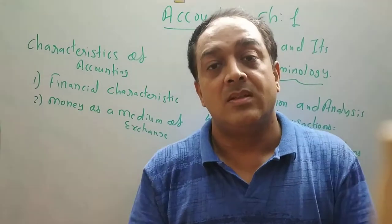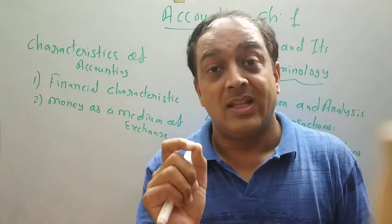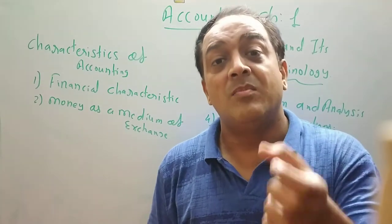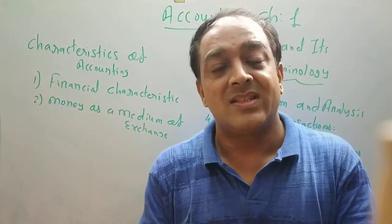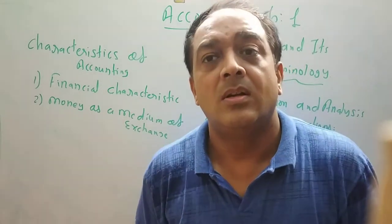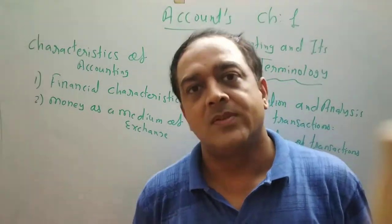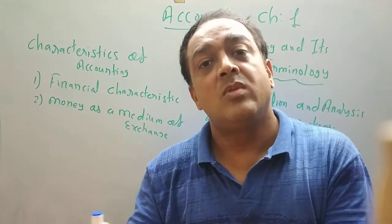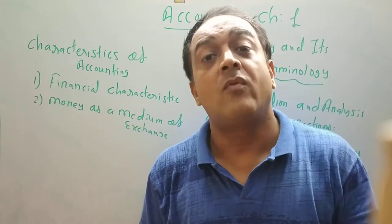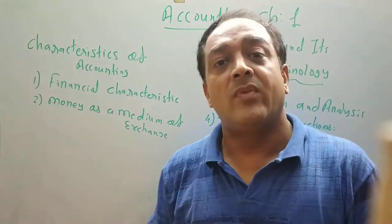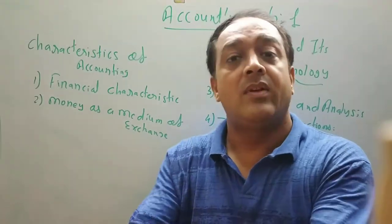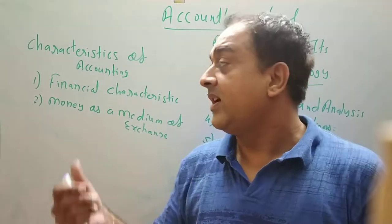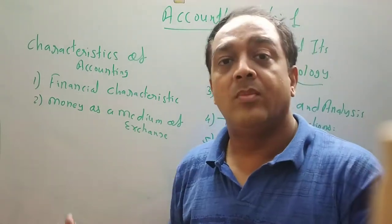For example, sold goods of rupees 10,000 — so 10,000 is recorded because of money as a medium of exchange. When a transaction takes place, the money must be a medium of exchange. For example, purchase furniture of rupees 40,000 in cash — medium of exchange here is money. So this transaction is recorded in books of account because money goes out and furniture comes in the business. That is called money as a medium of exchange, point number two.